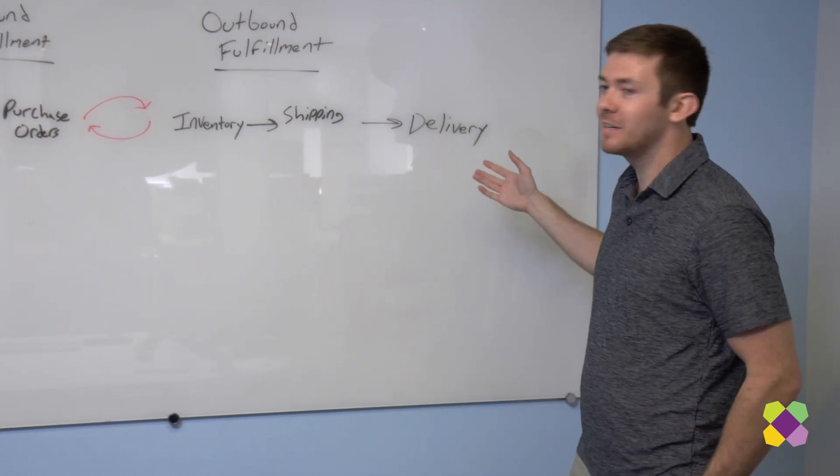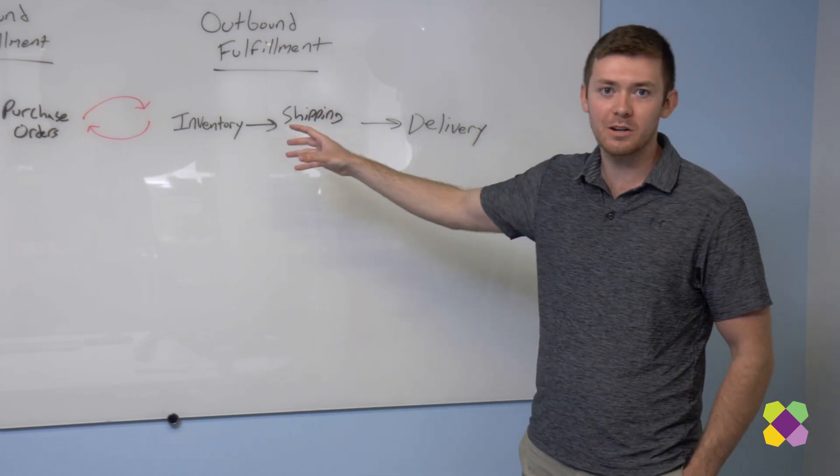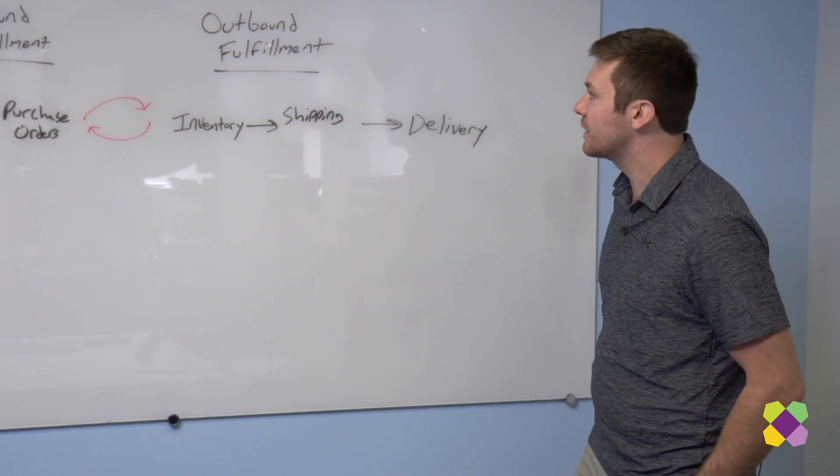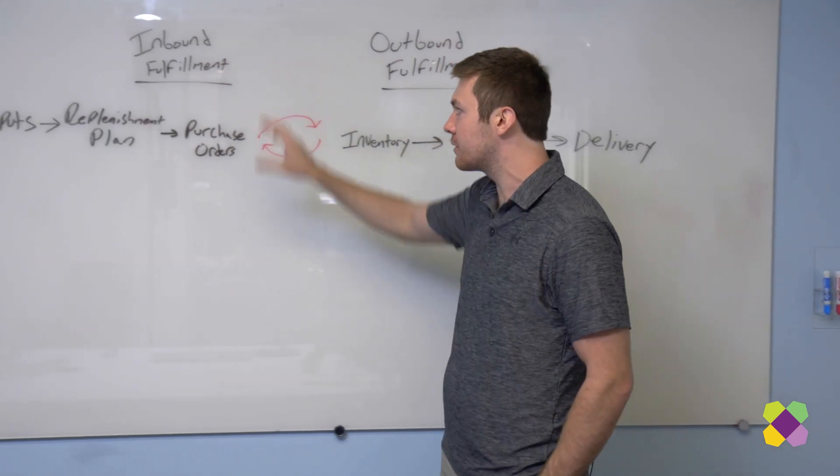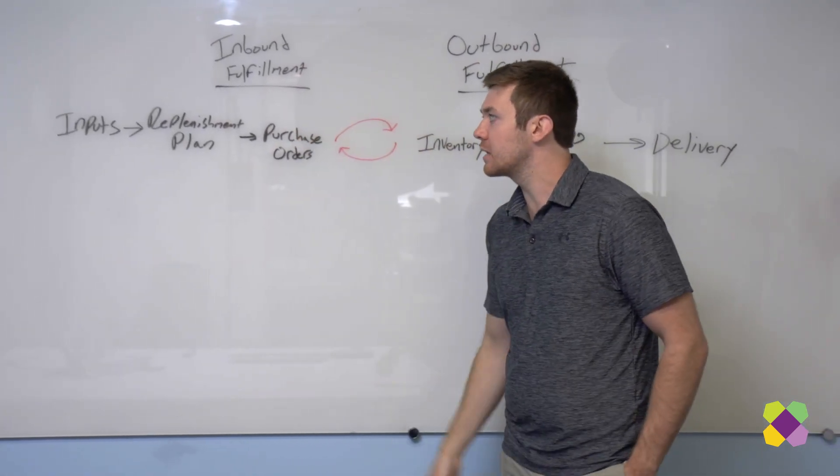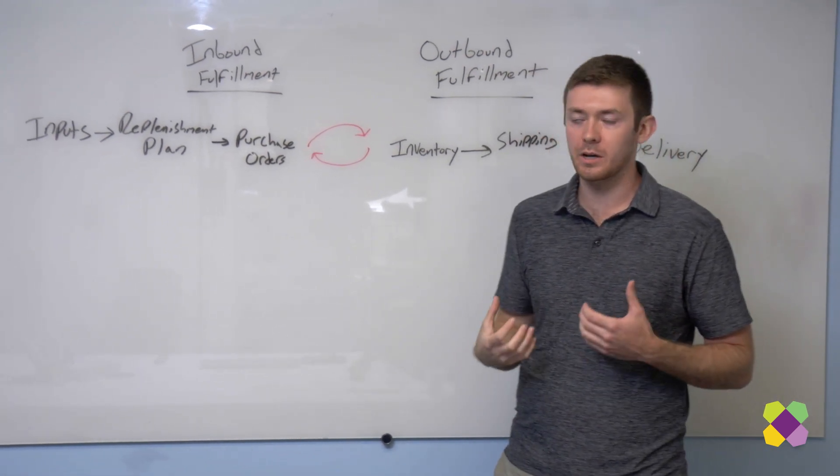Once this flow is completed, the actual item gets delivered to the customer and we go back through the same process. More recently in my time at Wayfair, I've shifted focus from the outbound fulfillment space into the inbound fulfillment space. So basically looking at how do we actually bring this inventory into our network so it's available for purchase from a customer.